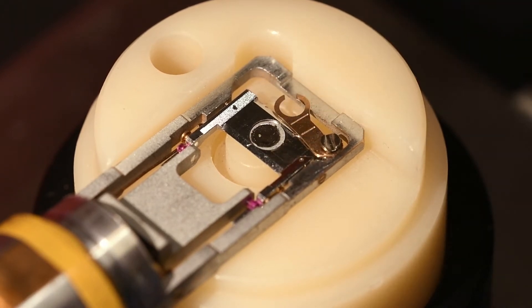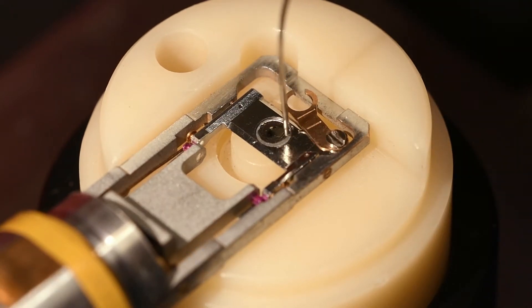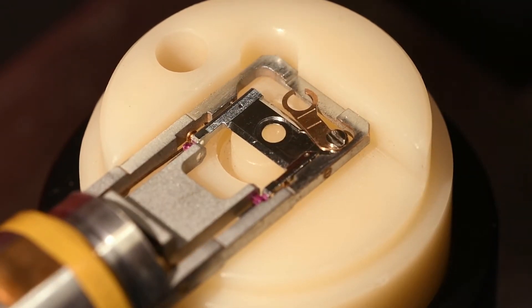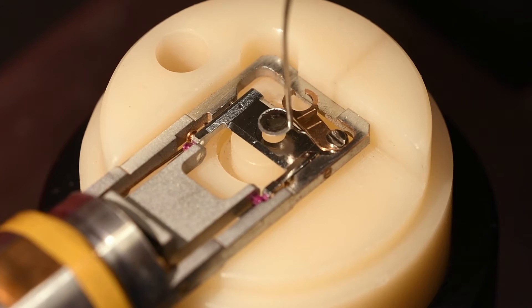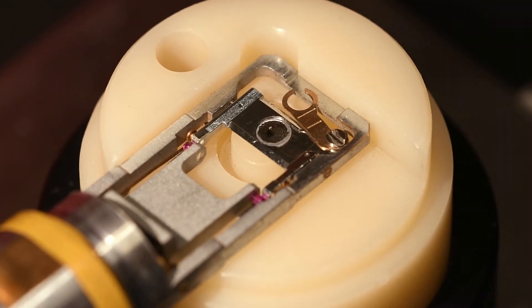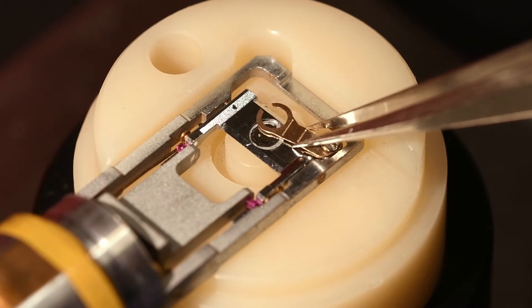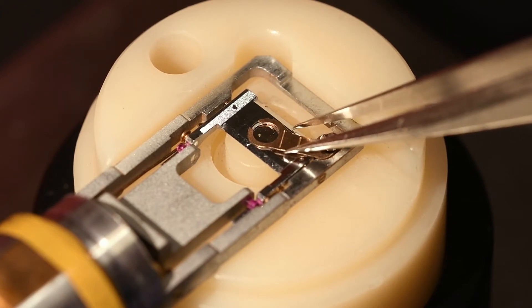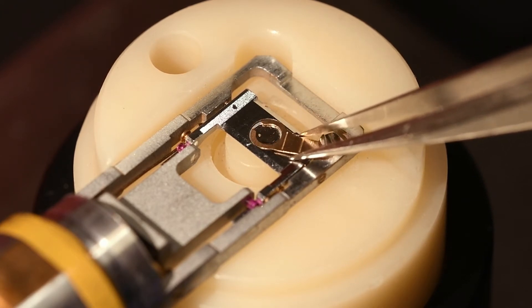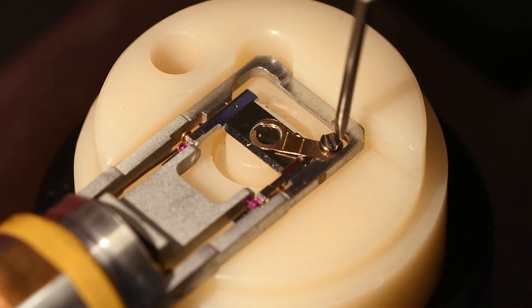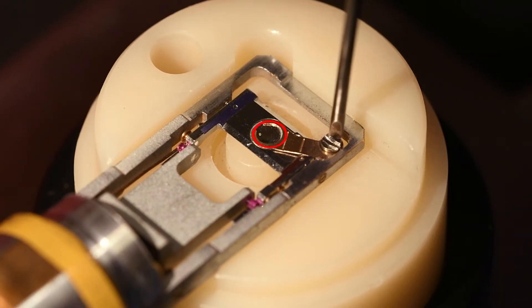Alternatively, you can use vacuum tweezers to handle your sample. Swing the retaining arm above the sample with tweezers. Gently tighten the screw. The retaining arm should be seated firmly within the sample well.